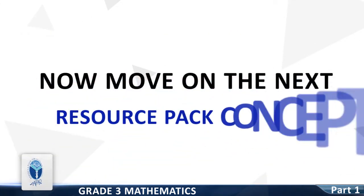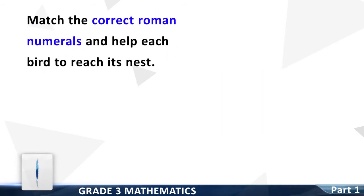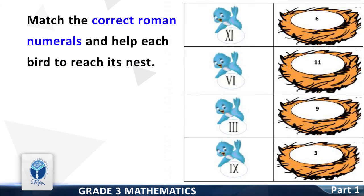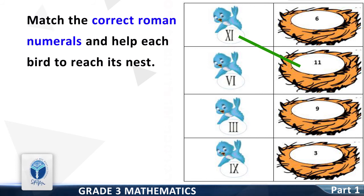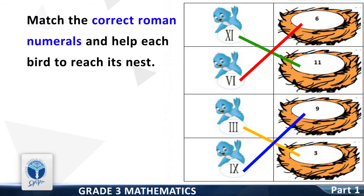Now we move to the next resource pack concept: Match the correct roman numerals and help each bird to reach its nest. Let's start from the first bird — it is 11. The second bird — it is 6. The third bird — it is 3. The last bird — it is 9.